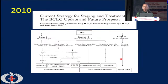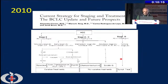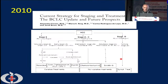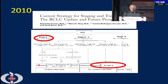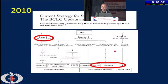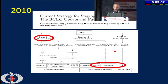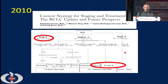Subsequently, in 2010, the third edition of BCLC staging came, where a new stage introduced was stage 0 — very early tumor stage — where they again recommended resection. That was also the time when the first successful drug came, that is sorafenib, and they introduced sorafenib into the treatment algorithm.